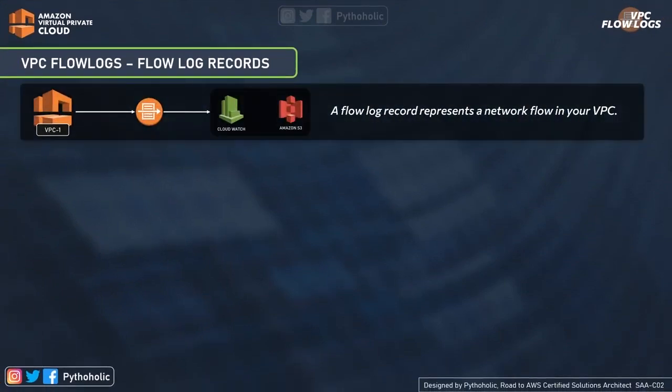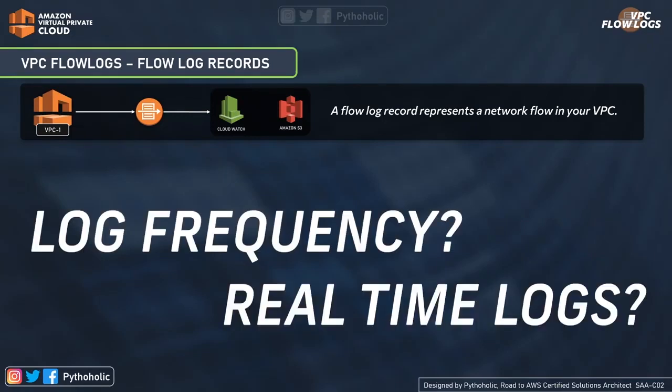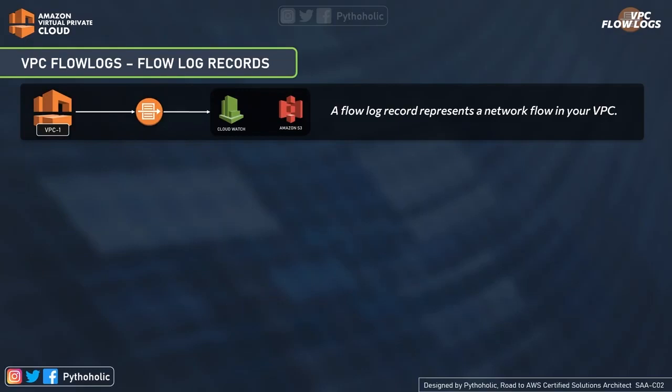After all this, you might still have some doubts like: we send logs, but what will be the frequency and is it sending logs in real time or not? So let's discuss that. When you read that a flow log record represents a network flow in your VPC, the flow log record captures information about the network internet protocol traffic flow — that is your IP traffic, which obviously means it is packet traffic.